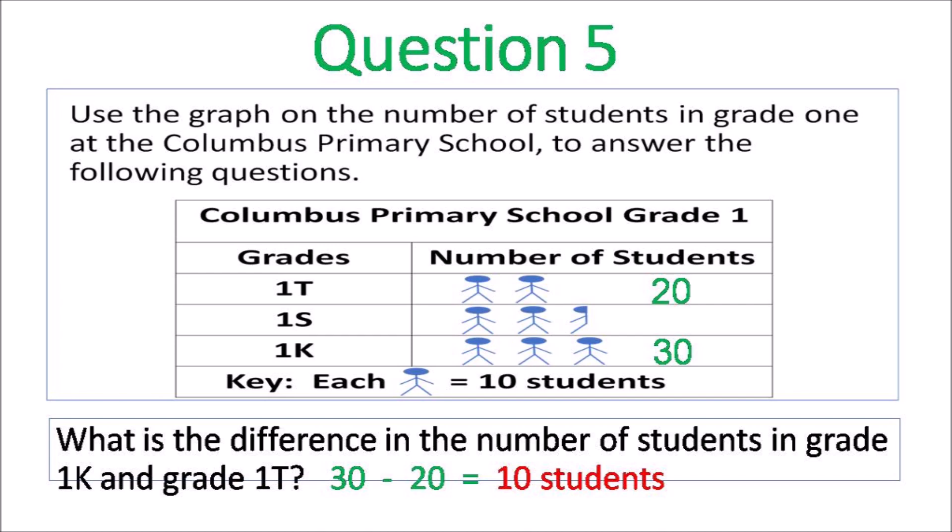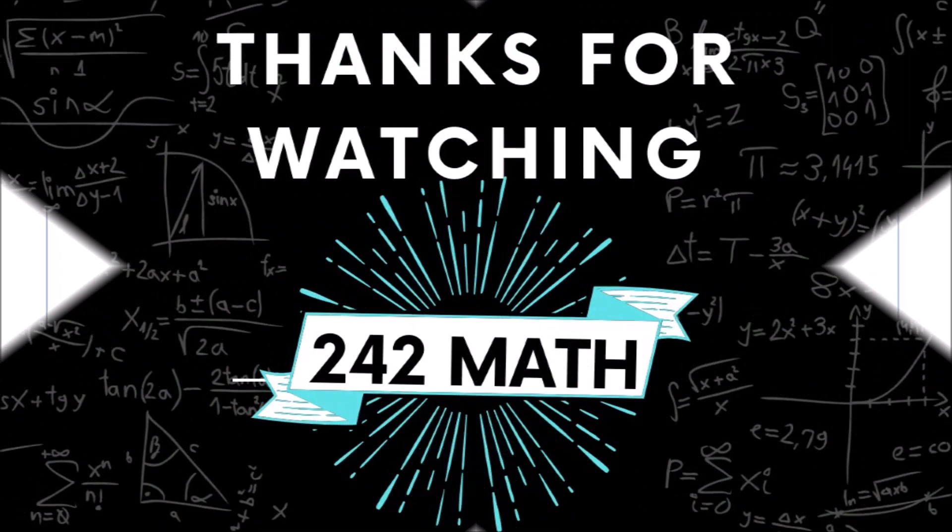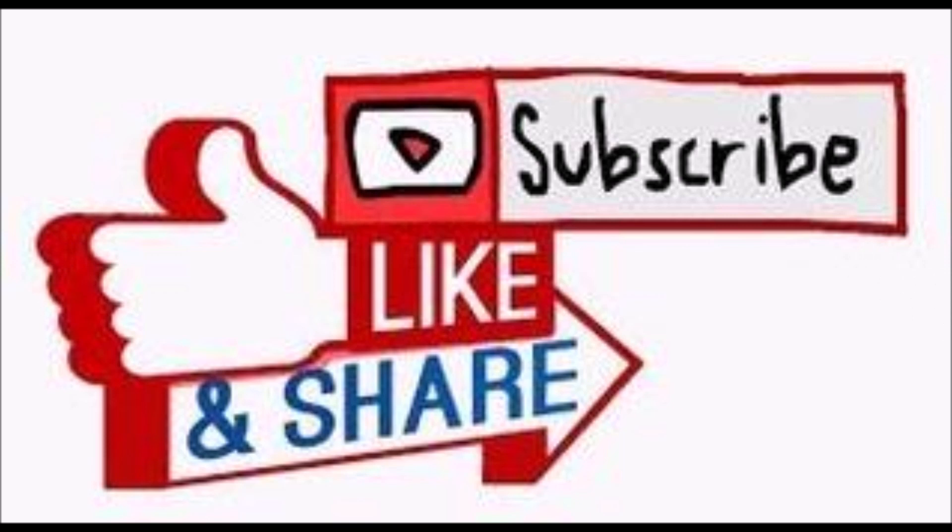Question 5, thirty minus twenty equals ten students. For that you have to work that one out, it's a trick question. Question 6, you add them all up, you get seventy five students. Thank you all for watching grade 3. Hope you got one hundred percent. I will see you in the next one. That's a wrap.